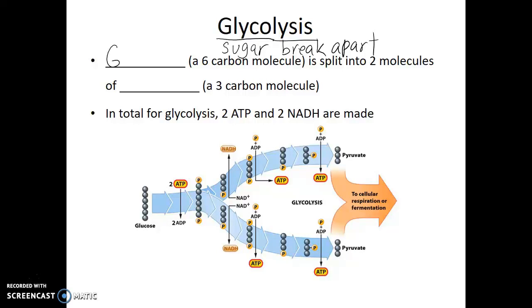In glycolysis, we take glucose — which is a six-carbon molecule — and split it into two molecules of pyruvate, which is a three-carbon molecule. This process of taking a larger, more complex molecule and breaking it into smaller pieces will release energy. The energy released is a net increase of plus two ATP and plus two molecules of NADH. While there is an initial investment of a few ATP to get this process started — the activation energy — the net result is plus two ATP and plus two NADH. We also still have two molecules of pyruvate, which have a lot of stored energy, and these then move on to the second step: the Krebs cycle.